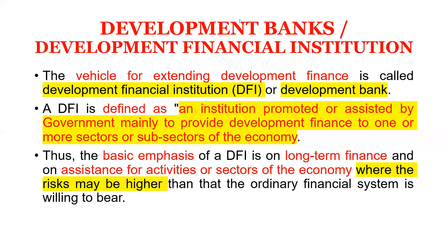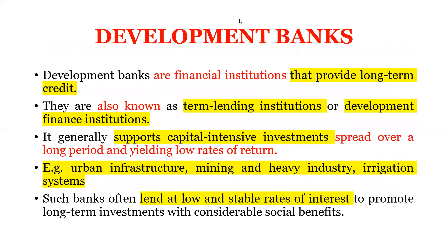The basic emphasis of DFIs is long-term finance, and assistance for activities or sectors where the risk may be higher than the ordinary financial system is willing to bear. For example, an irrigation project or a national highway project carries more risk. Commercial banks provide medium to short-term loans, while development banks provide long-term credit finance. They are also known as term lending institutions.